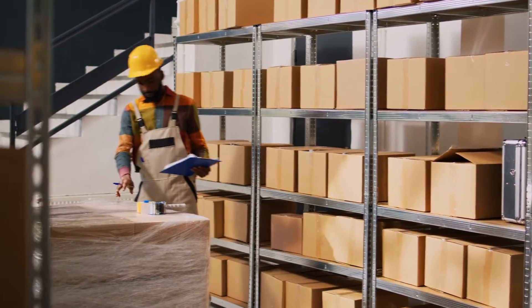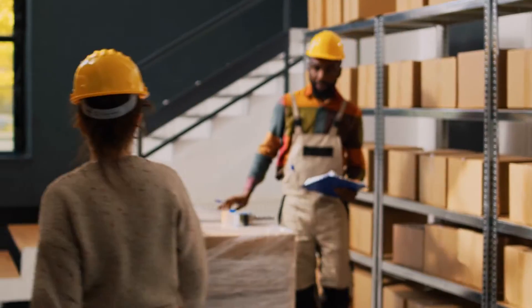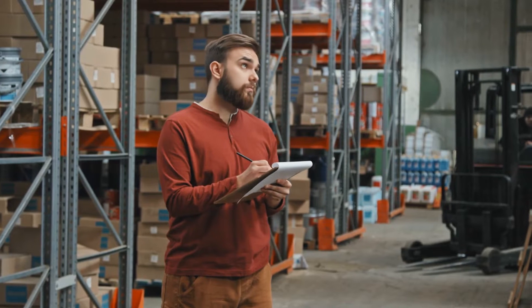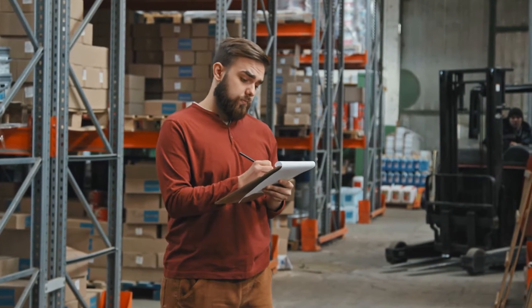If safety data sheets are the comprehensive guide, think of GHS labels as your quick visual cheat sheet for chemical safety. They help workers quickly see and understand what they're dealing with. Let's break down each of the seven elements you'll find on a GHS label. The product identifier is like the chemical's name tag — it tells you exactly what the chemical is, whether it's a trade name, a chemical name, or a code. This is how you match the chemical to its safety data sheet.